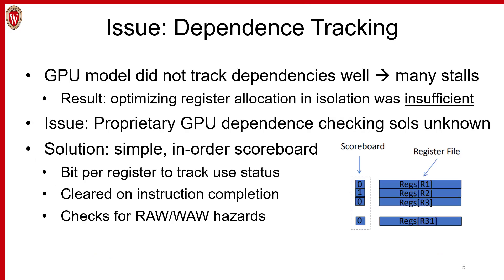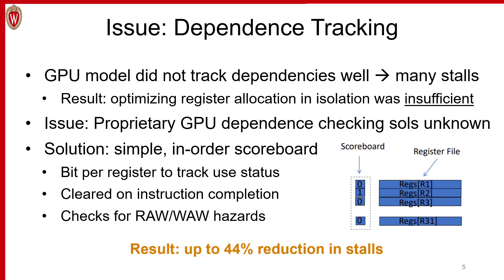So we started digging further and found issues with the way dependencies were being tracked — they could be improved and tracked at a finer granularity to handle the additional parallelism our new register allocator was providing. The net result was that now we had many more stalls, and in hindsight, optimizing the register allocator in isolation was not sufficient. Proprietary GPU dependence-checking solutions are not publicly known, but looking at recent literature and patents, we found that using a relatively simple in-order scoreboard could get much better efficiency. Our results showed up to a 44% reduction in stalls, meaning our dynamic register allocator was now helping and giving more realistic results relative to real hardware.